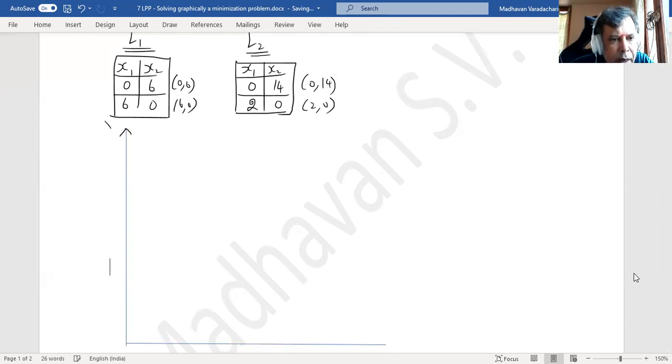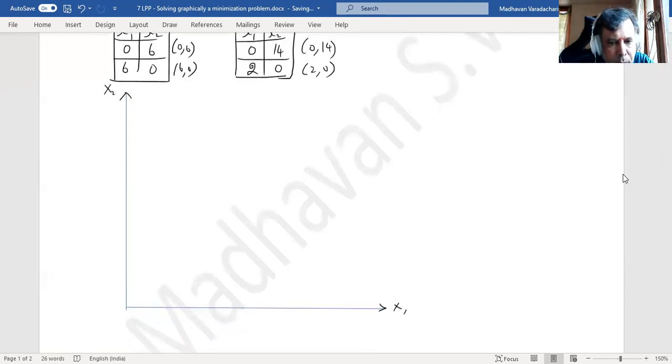This is our x₂ axis, this is our x₁ axis. x₁ the least is 0, maximum is 6: 1, 2, 3, 4, 5, and 6. Approximately I am taking our x₁ axis, considering 1 cm as 1 unit.